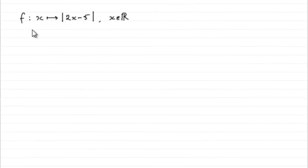For this first part, we've got f is such that x maps onto the mod of 2x minus 5, and it's valid for all real values of x. So how do we sketch this graph? The graph of f(x), because we can rewrite this in this form: f(x) equals the mod of 2x minus 5.